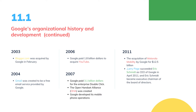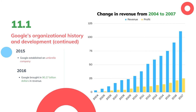The acquisition of Motorola Mobility by Google for $12.5 billion in 2011 demonstrated the importance of acquiring access to a mobile market. With a market share of 52.3% and over 180 million devices sold in the third quarter of 2011, Android dominated the market. Larry Page succeeded Eric Schmidt as CEO of Google in April 2011, and Eric Schmidt became Executive Chairman of the Board of Directors. In 2015, Google established an umbrella corporation called Alphabet due to its increasing portfolio diversity. In 2016, Google brought in $90.27 billion in revenue, increasing 20.3% year-over-year.